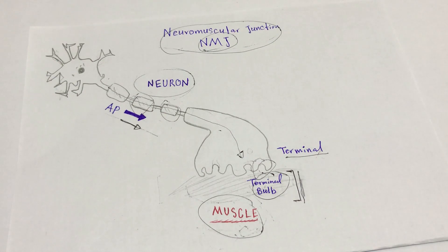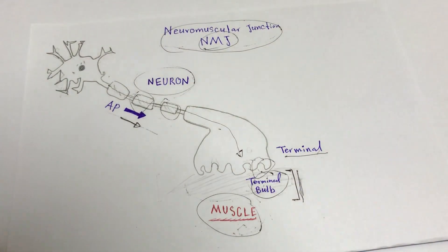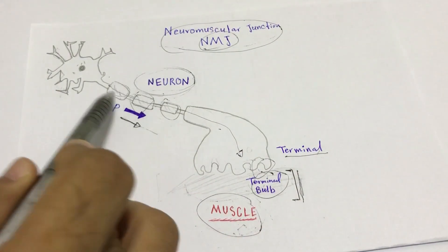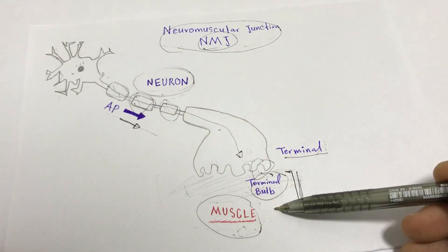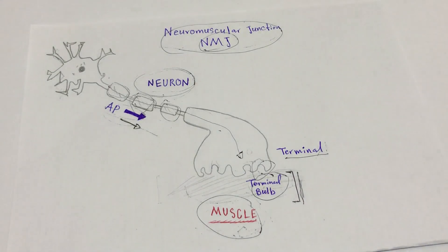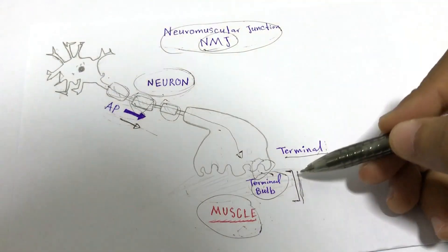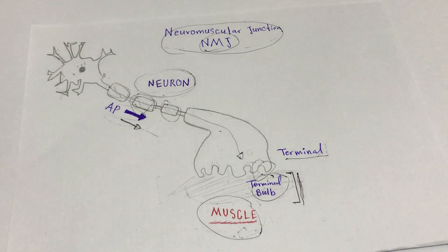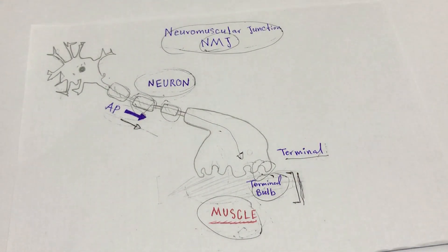The neuromuscular junction is the junction or space between a neuron and a muscle. Here we have a neuron with some myelin sheath wrapped around it, and here is our terminal bulb. The neuron will generate an action potential which will propagate and send signals to the muscles. The neuron and the muscle are not connected — they are separated by a small gap called the synaptic cleft. The action potential is passed on through chemicals called acetylcholine, ACH, which are the neurotransmitters.